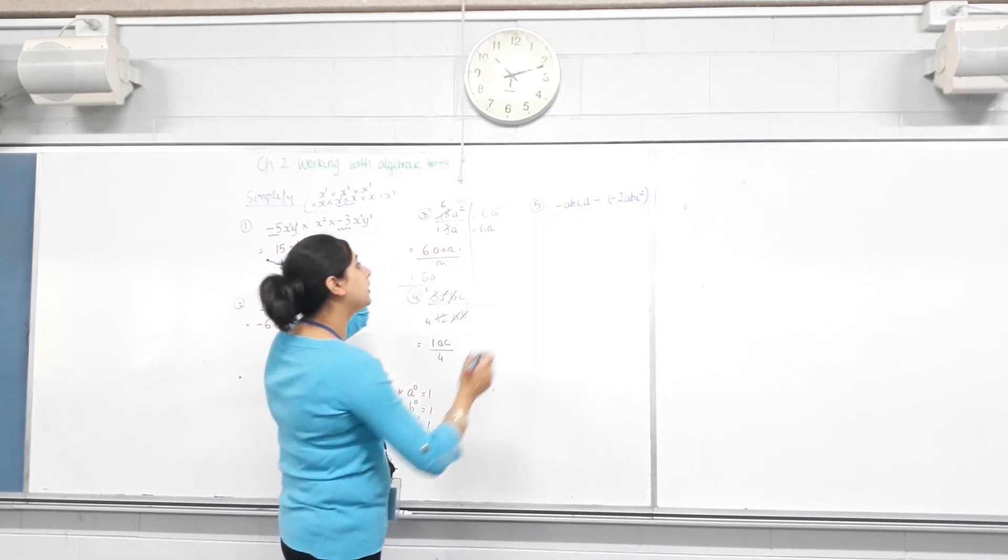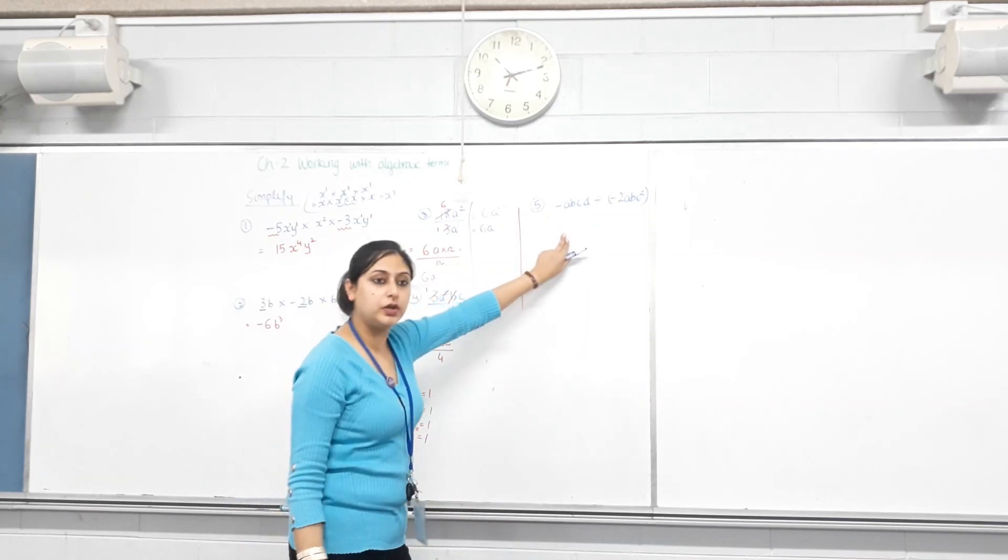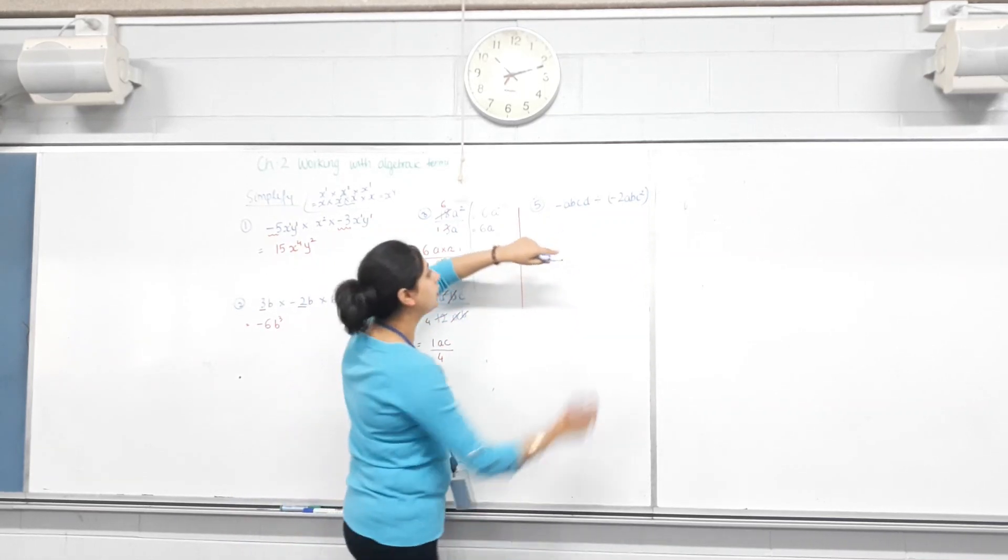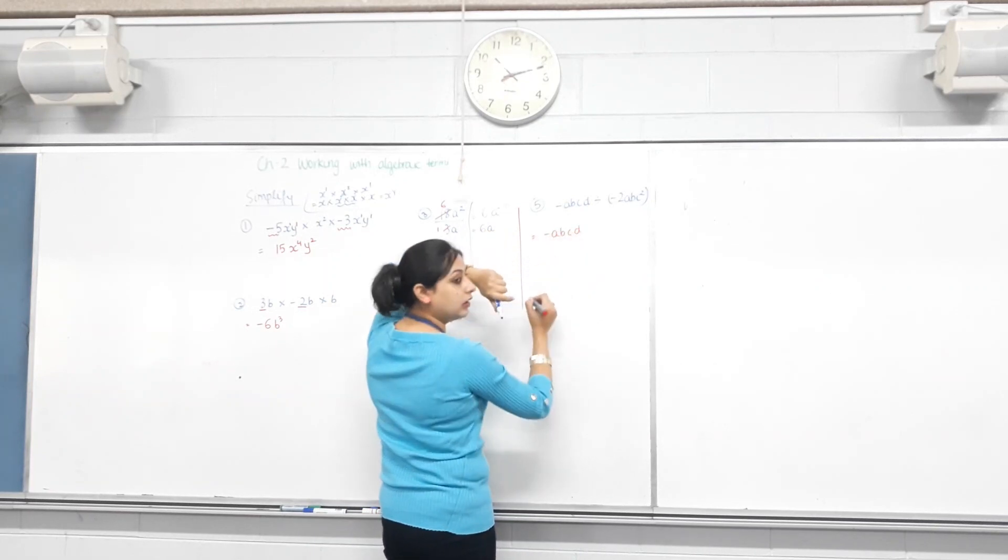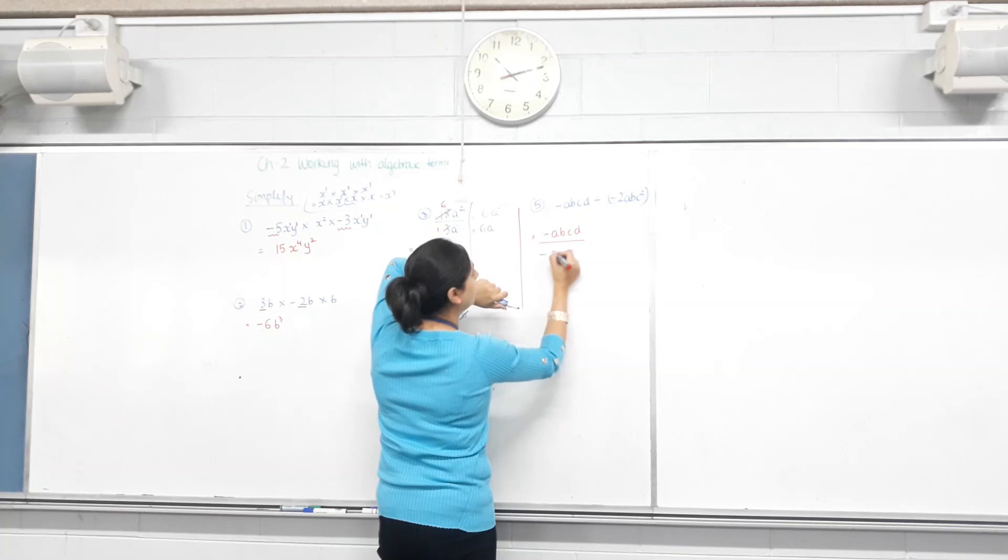Next one. Division question. The first thing you do is write it as a fraction. So, this is your numerator: A, B, C, D. Divide it by the whole thing. Negative 2A, BC squared - your denominator.